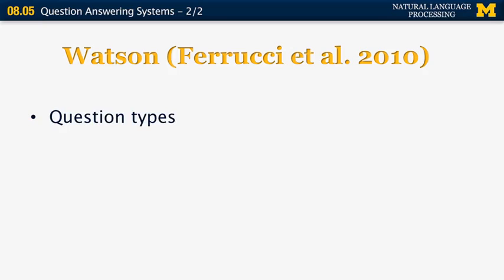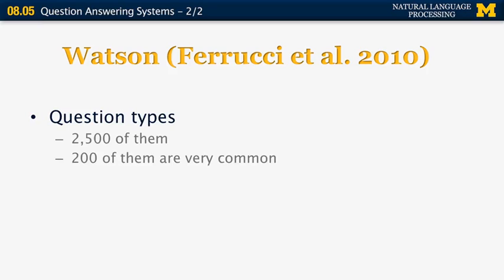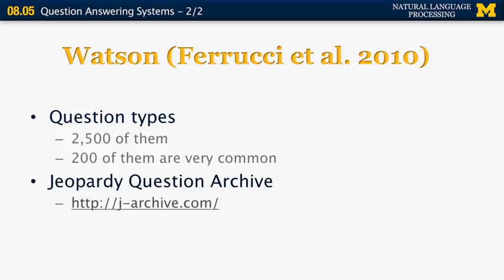Watson uses a very large taxonomy of question types — 2,500 of them, more than any of the other systems. According to the law of diminishing returns, about 200 of those question types are really common, and the rest appear just once or twice in the entire history of Jeopardy games over 50 years or so. This archive is actually available on the internet — you can check every single Jeopardy question asked over the last 50 years, including the ones Watson had to answer.